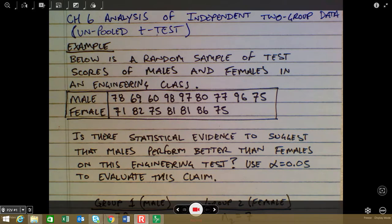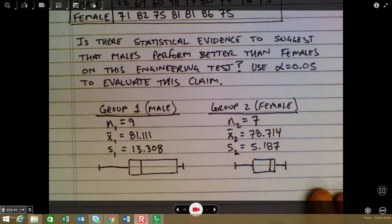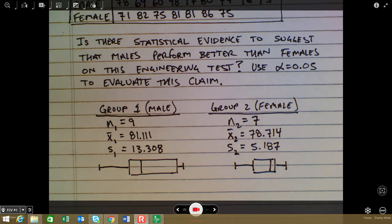We're going to use alpha equal to 0.05 to help evaluate this claim. First, it's important to do a quick pre-analysis of the data to look at the mean, standard deviation, and some other things. Group 1 is the males, with a sample size of 9, a mean of 81.11, and a standard deviation of approximately 13.31. Below is roughly what the box plot looks like, obtained from my calculator.